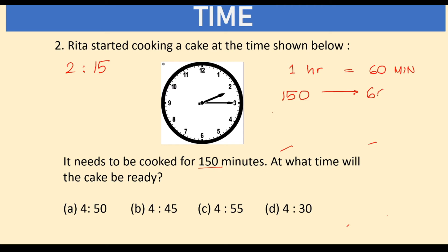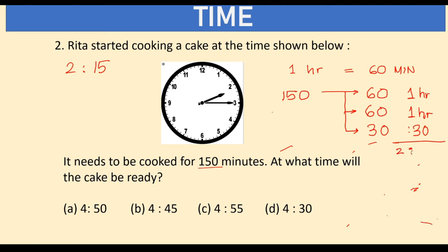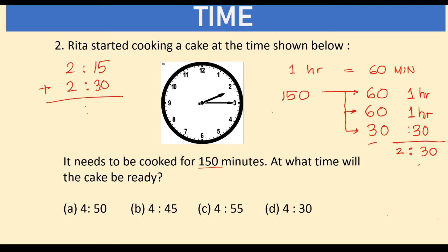Here we have 150 minutes. Let's break it in terms of 60: 150 is 60 plus 60, which is 120, plus 30 — that's 1 hour plus 1 hour plus 30 minutes, so 2 hours and 30 minutes total. Adding that to the starting time of 2:15 — minutes: 15 plus 30 is 45, hours: 2 plus 2 is 4 — the cake will be ready at 4:45, option B.